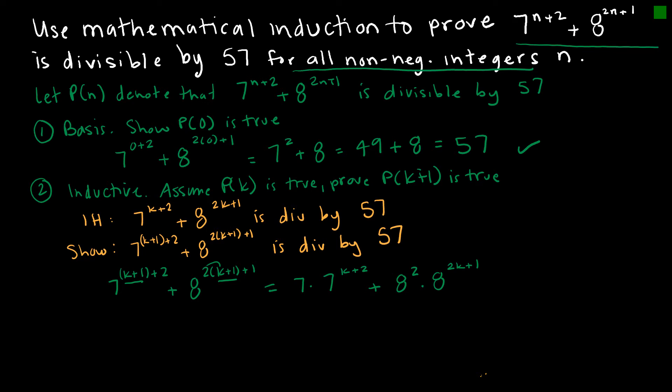Now what I want to do is say, what if I took a 7 out of everything? Before I do that, let's go ahead and rewrite this with a 64 instead. And so now if I factored out 7 from everything, that would give me 7 times 7^(k+2). Over here, I can split that up because 64 is the same as 7 + 57.